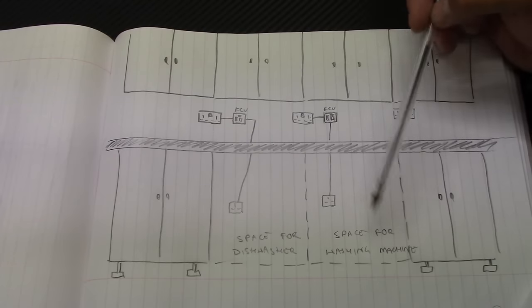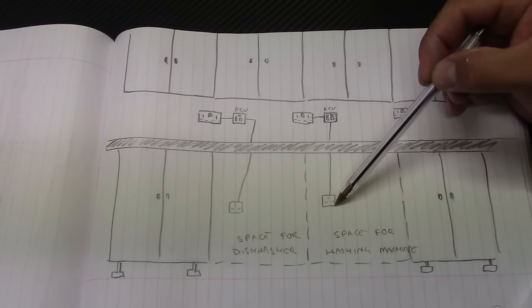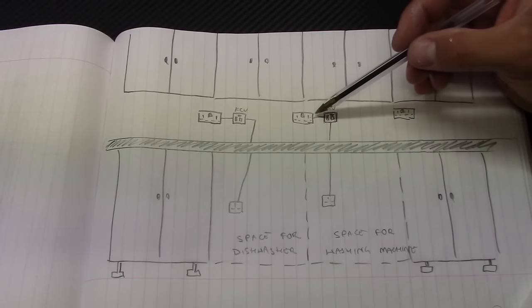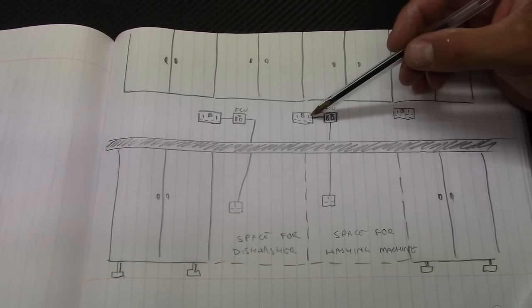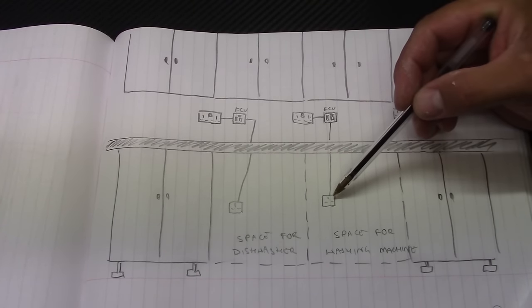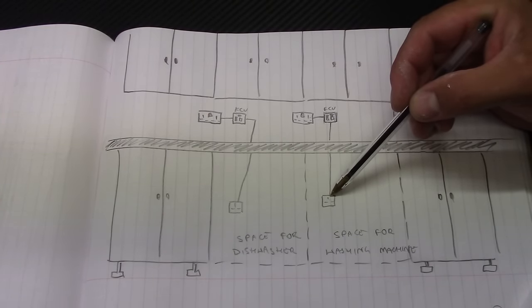Another space for the washing machine. This needs single sockets under the worktop. So obviously you can take the cable straight from the socket outlets which is on the ring and connect it here as an unfused spare.